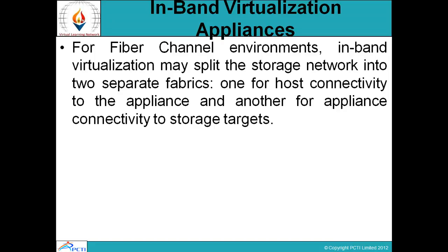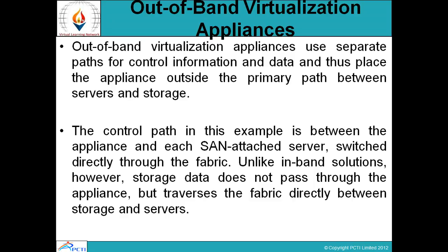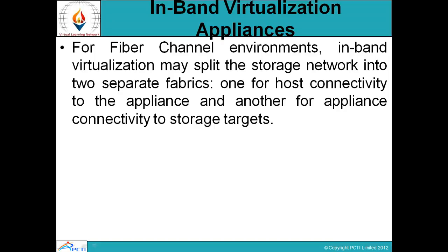In-band appliance solutions can also be applied to Ethernet-attached hosts on the network. Front-end block access can be Ethernet using vendor-specific IP block protocols, while back-end storage access may be via Fiber Channel, parallel SCSI, or other disk protocols. This type of in-band virtualization appliance provides an entry-level iSCSI option suitable for small businesses.